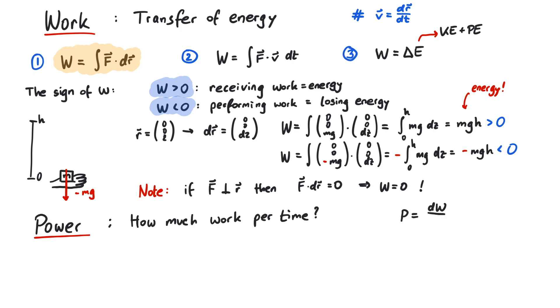Let's take our previous example. Imagine we raise the object in 10 seconds. Then the power of this action is mgh divided by 10. Now imagine we do the same process, but very slowly. Say we need 10 minutes for this. Then the corresponding power is mgh divided by 600. As you can see, if you do the same work in less time, then the required power is larger. And that's pretty much it for this time. Thanks for watching.